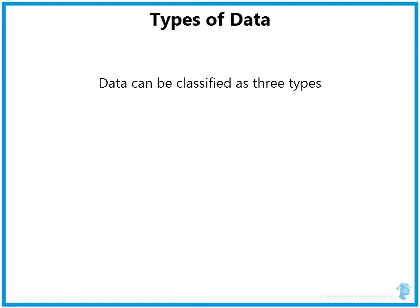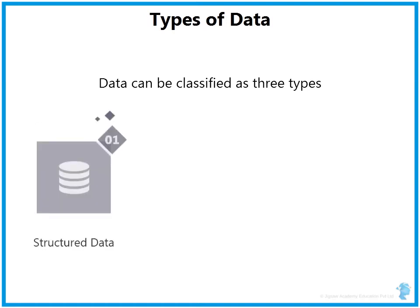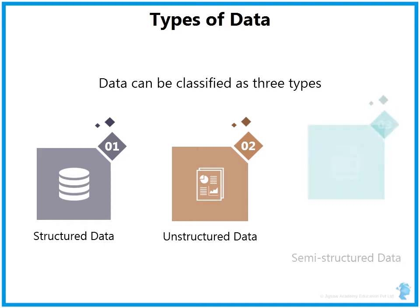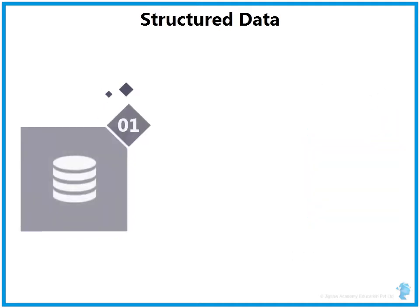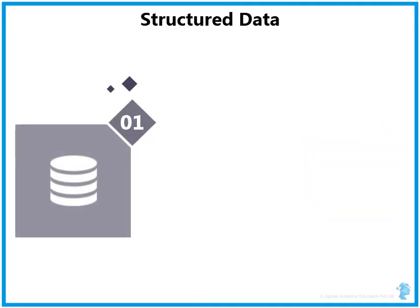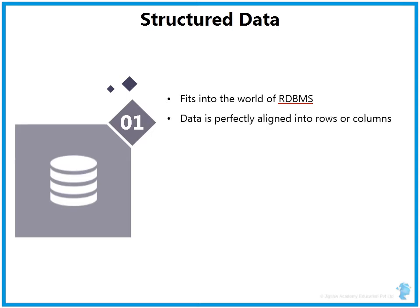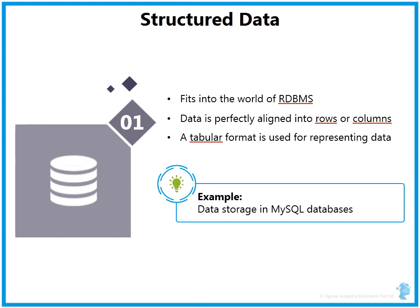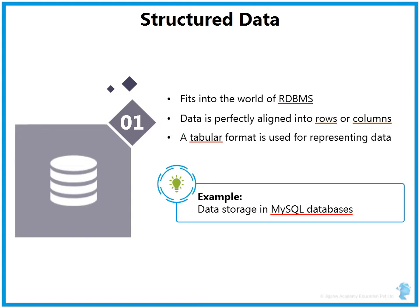Data can broadly be classified into three categories: structured data, unstructured data, and semi-structured data. Structured data is that which traditionally fits into the world of RDBMS — the relational database management system — where data is perfectly aligned into rows and columns. A tabular format is used for representing data in relational database tables. A typical example would be data stored in MySQL databases.